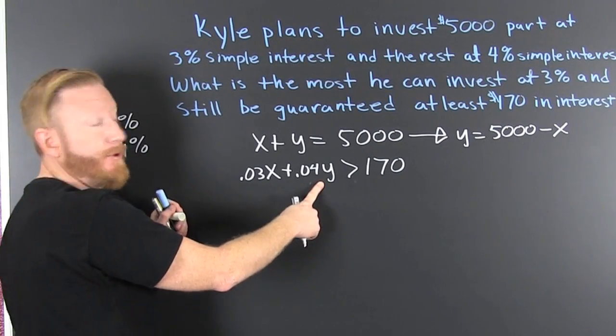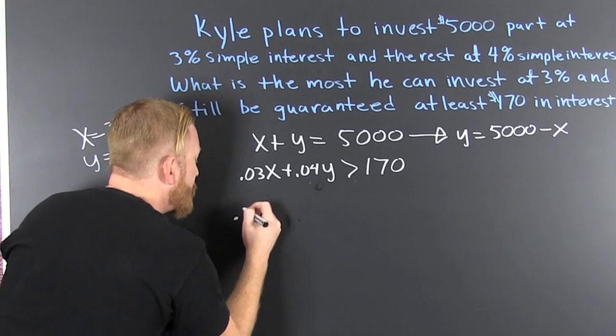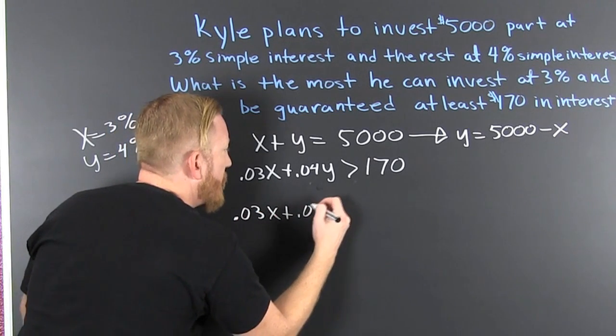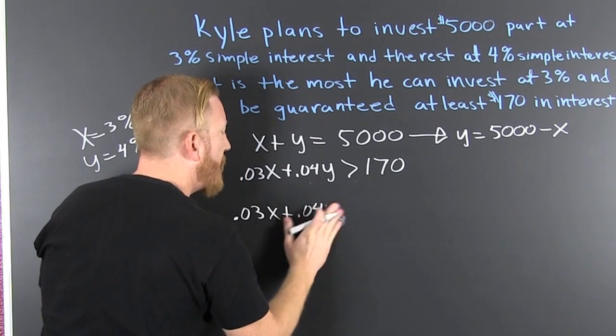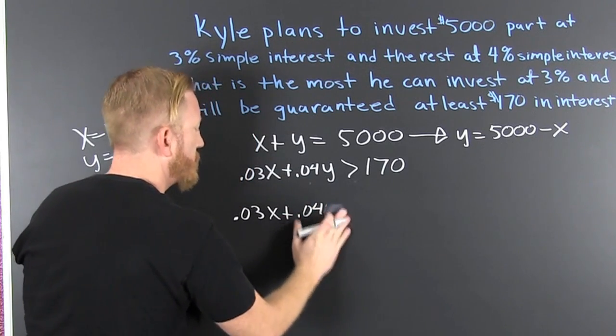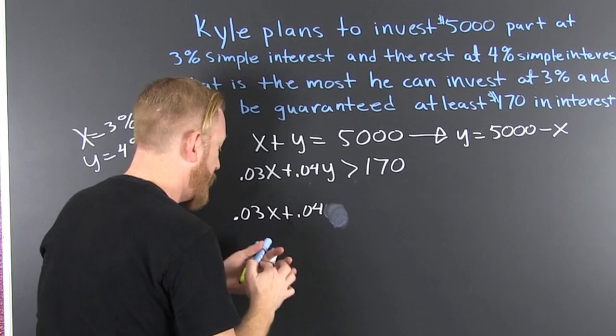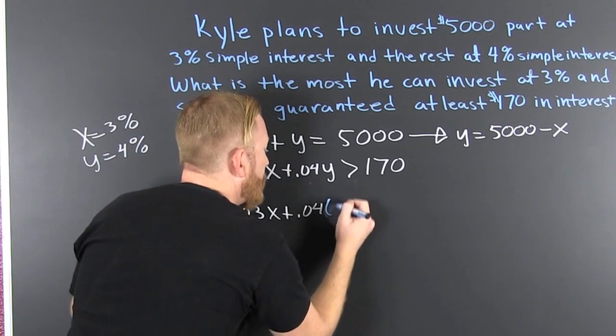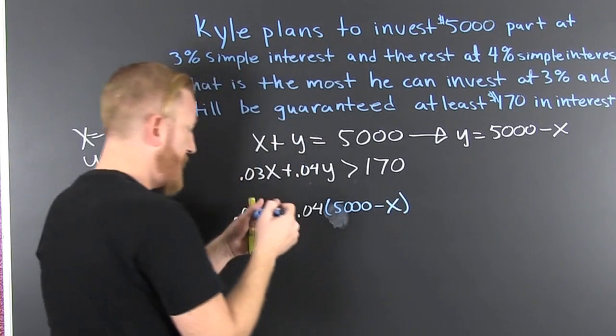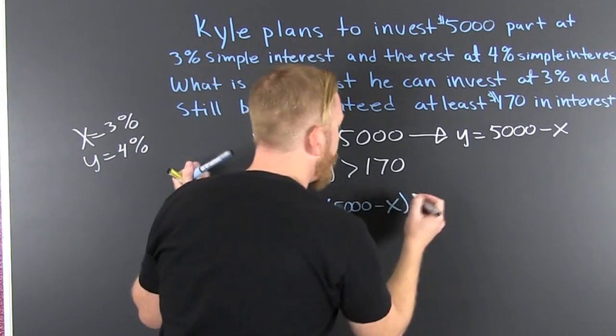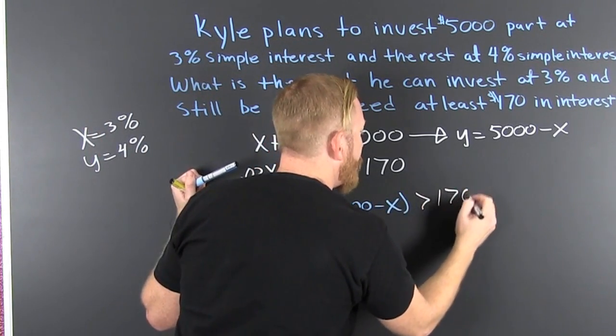So you have 0.03X + 0.04Y. What's my new Y? 5,000 - X is my new Y. That needs to be bigger than 170, and that's probably the part where the help-me-solve-it let you down.